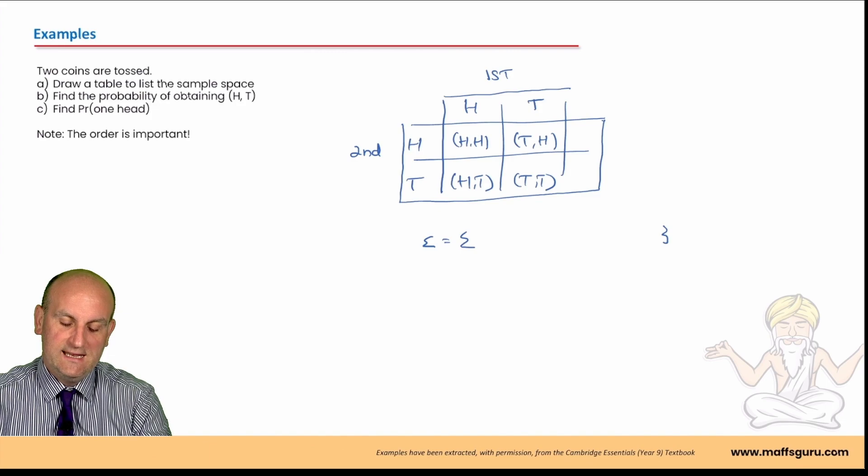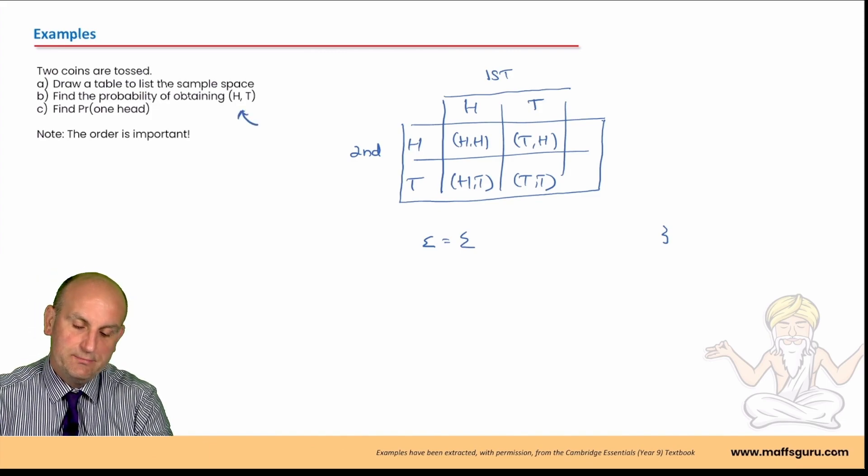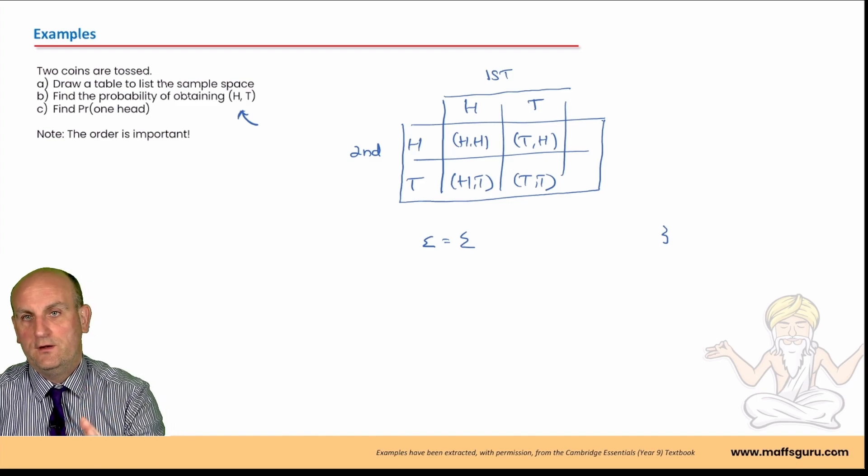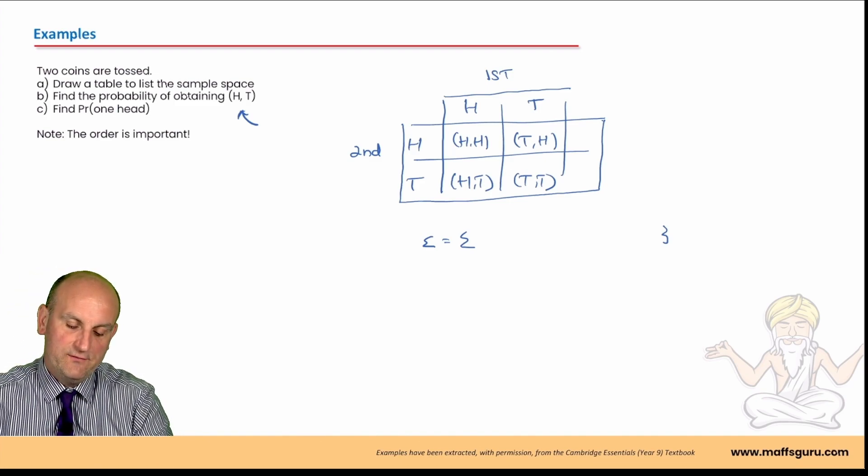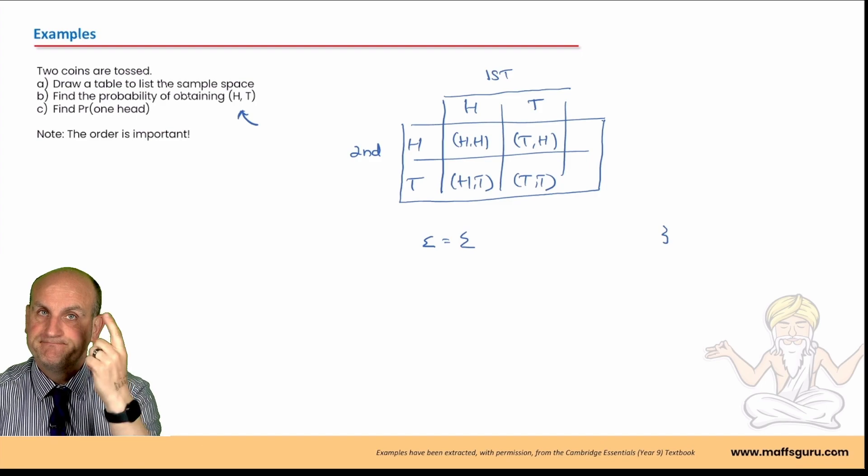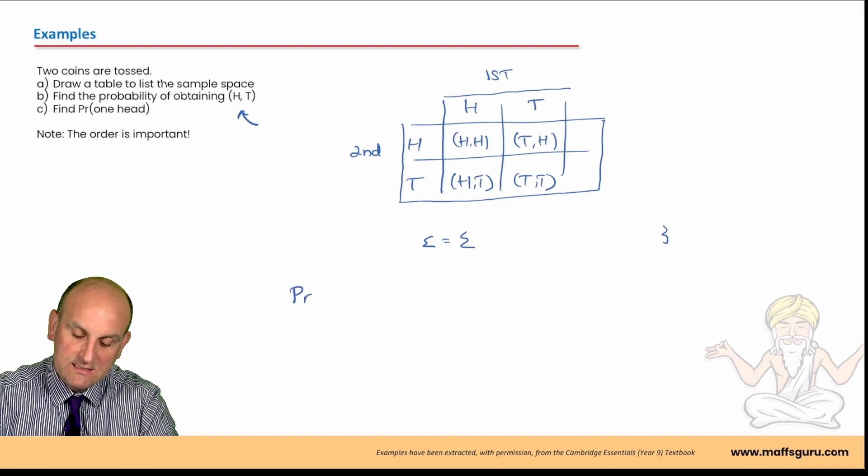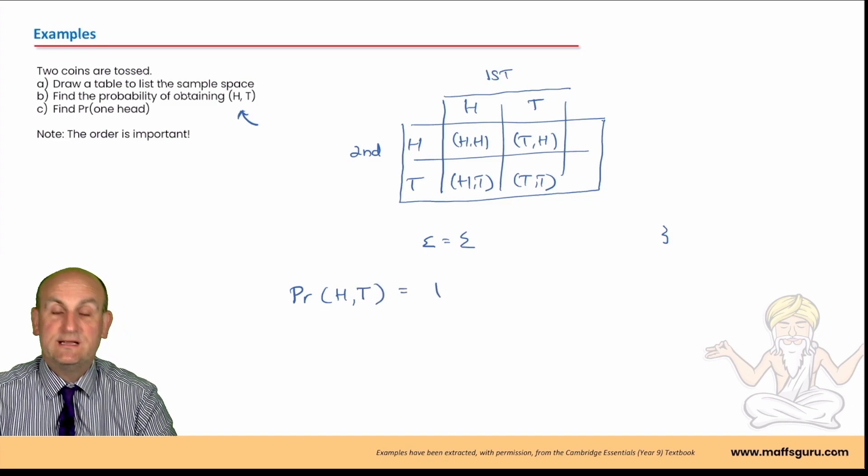Find the probability of obtaining H, T. Now, here, the order is important. It's got to be head followed by tail. So, how many of those are in my table? One. Congratulations. So, my probability of H comma T is going to be one. Is that right? Nope.